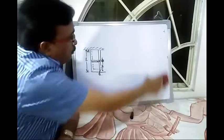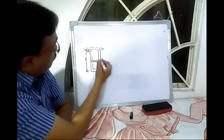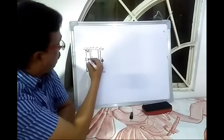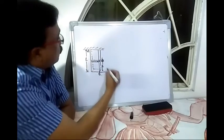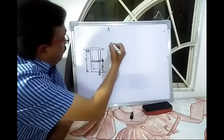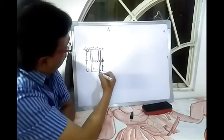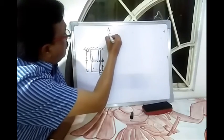Now consider a bar hanging from a fixed end, hanging freely, whose length is equal to L, the cross-sectional area A, and the Young's modulus E.